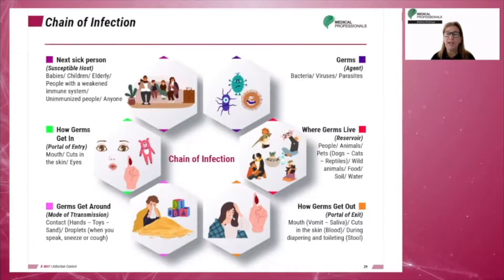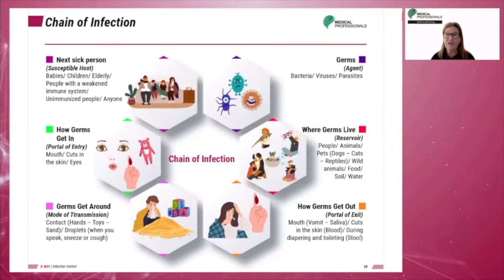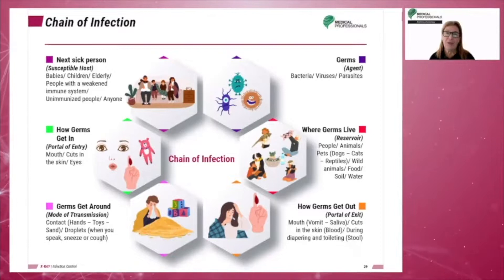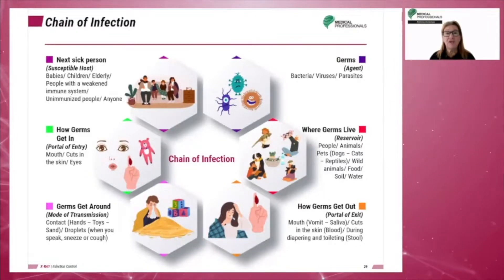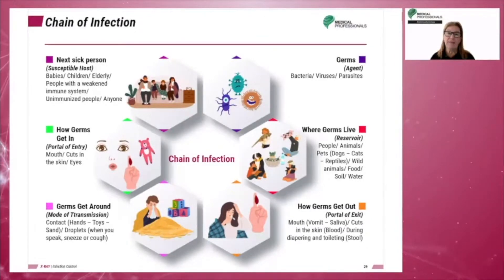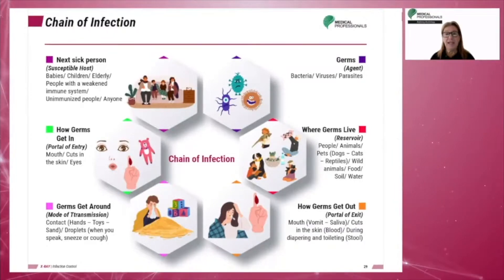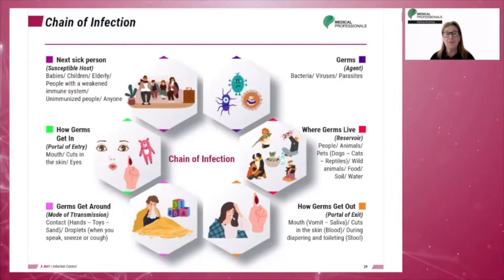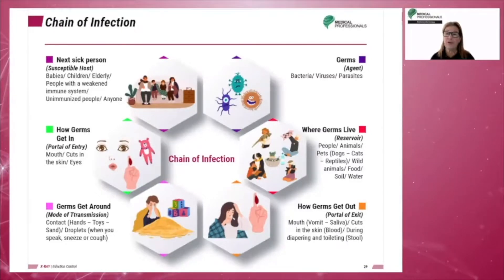Of special note are carriers — individuals who show no sign of illness but have infectious microorganisms in or on their body. One famous example is Mary Mallon, born September 23rd, 1869, and died November 11th, 1938. She was known as Typhoid Mary and was the first person in the United States identified as the asymptomatic carrier of the pathogen associated with typhoid fever. She was presumed to have infected 51 people, three of whom died, over the course of her career as a cook.